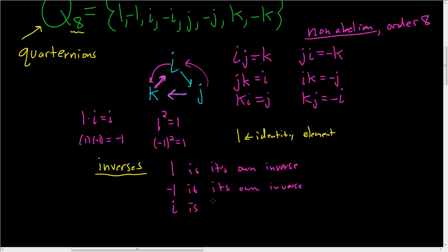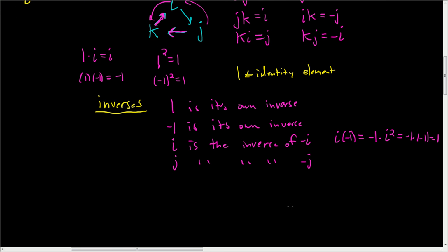I is the inverse of negative I, and we can check this quickly. If you do I times negative I, this is the same thing as saying negative 1 times I squared. This is negative 1 times negative 1, which is 1. And likewise, J is the inverse of negative J. And K is the inverse of negative K.